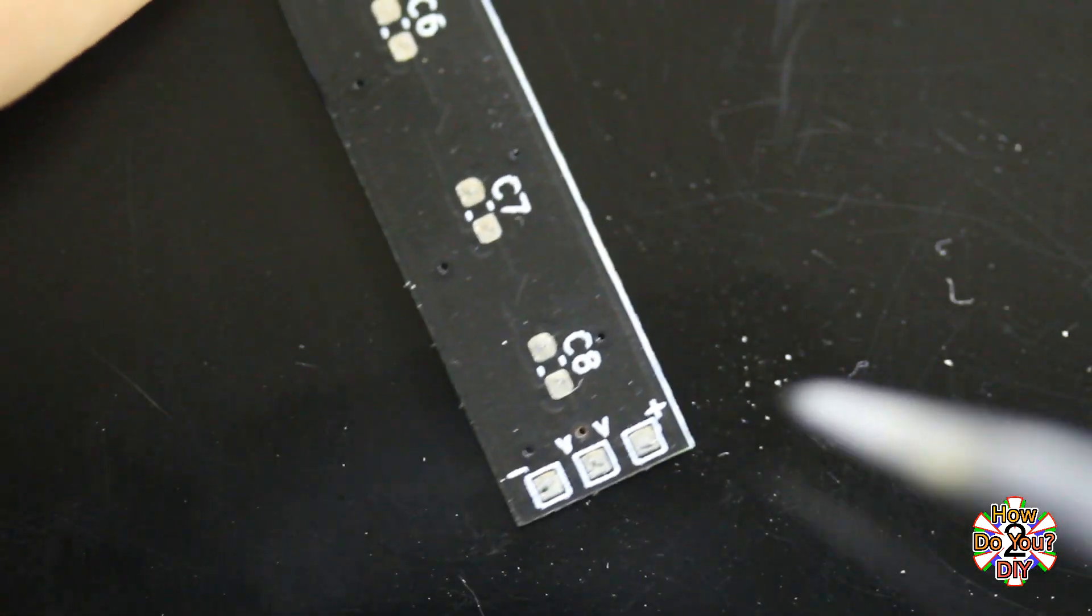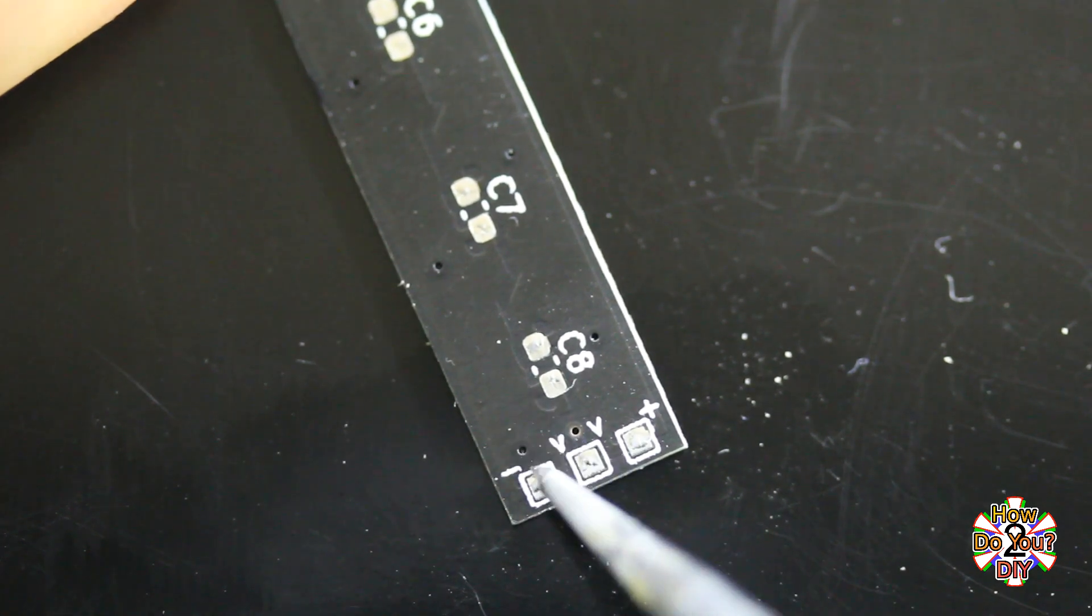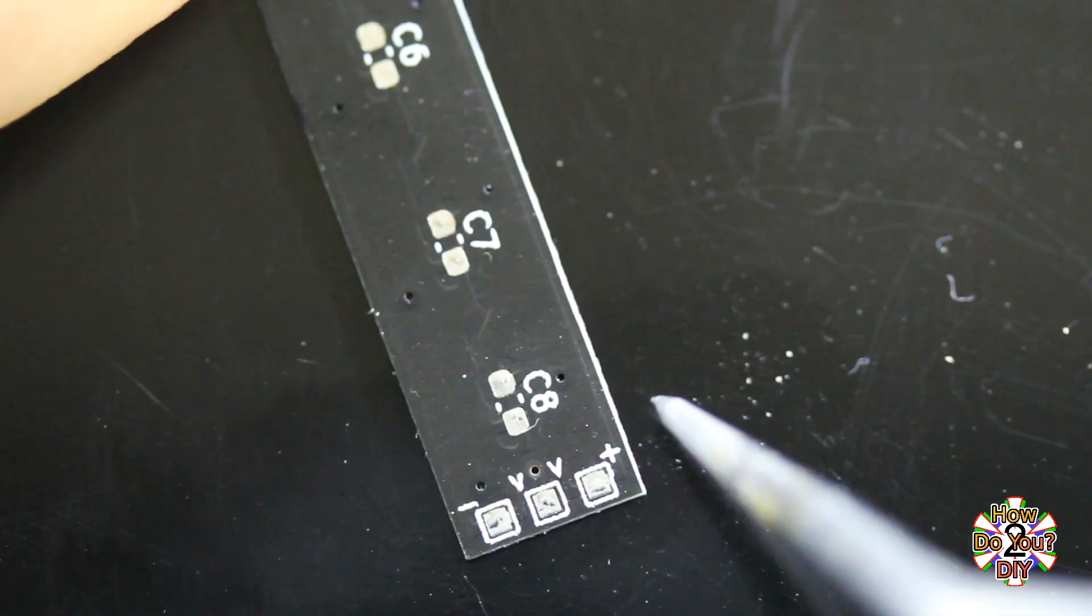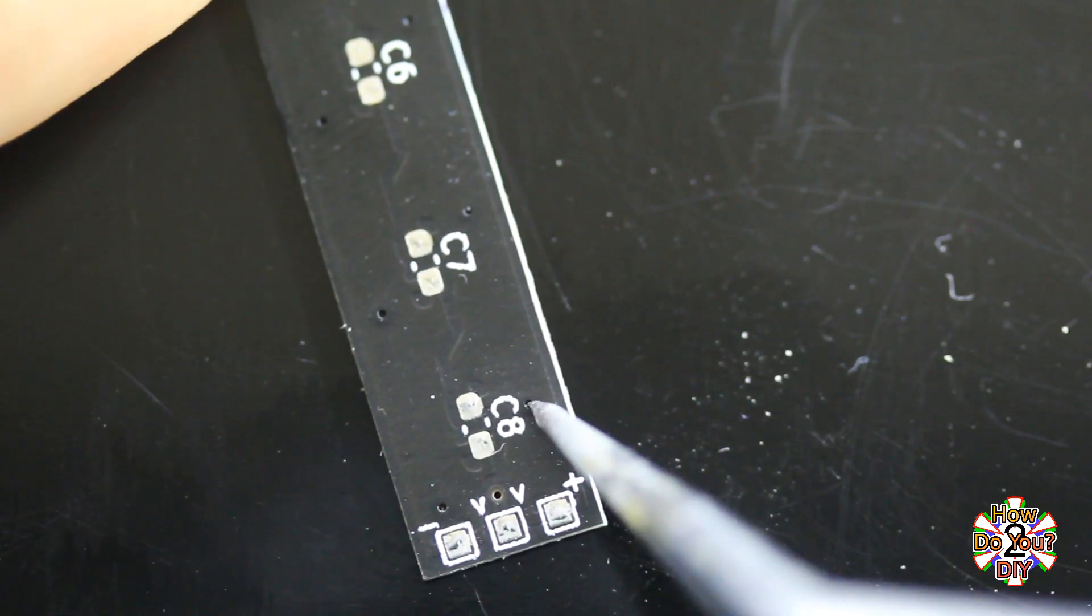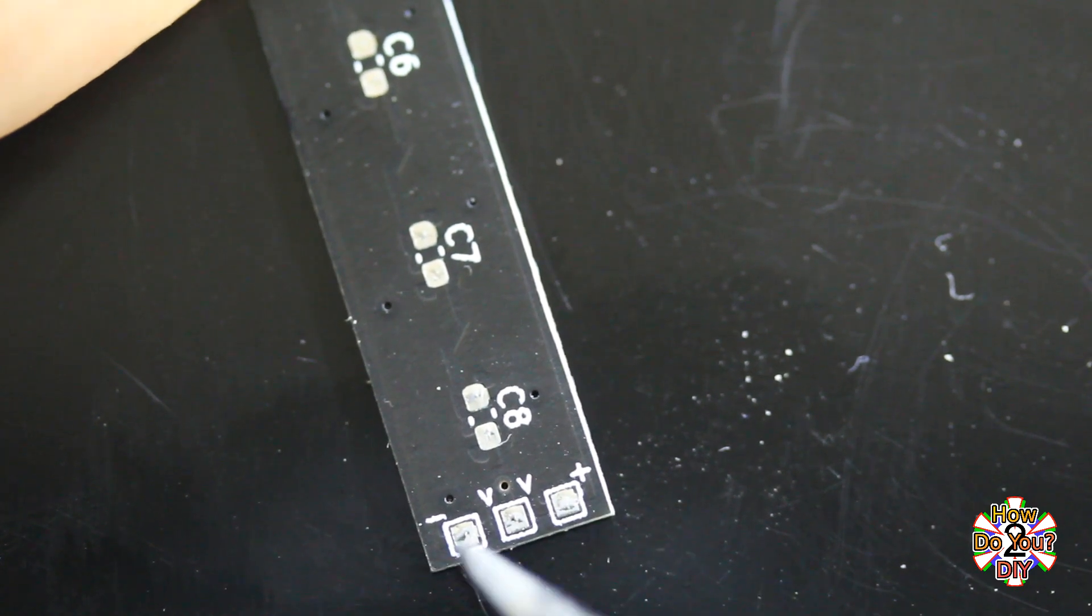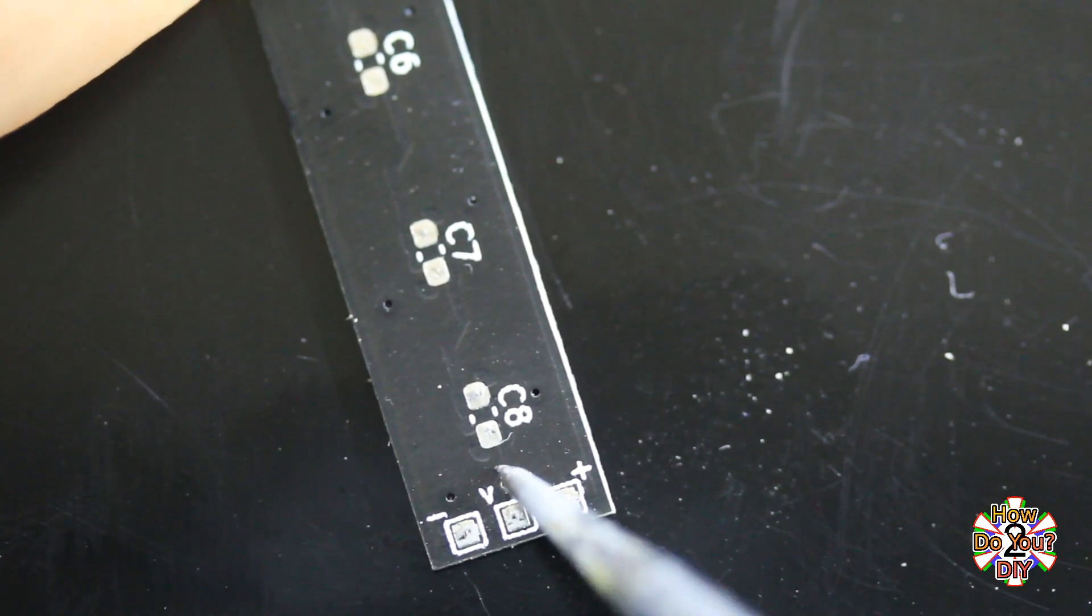Each of the capacitor solder points connects to one of the power traces. At the bottom of the board you can see the three solder points similar to the top. Again, the data solder point has arrows showing the direction of the data flow.